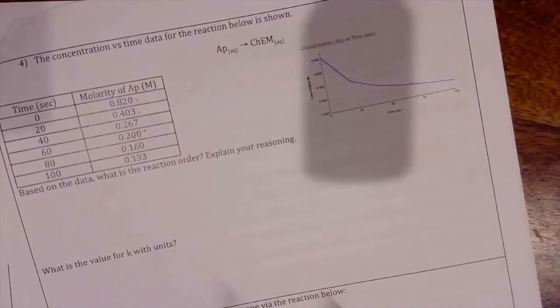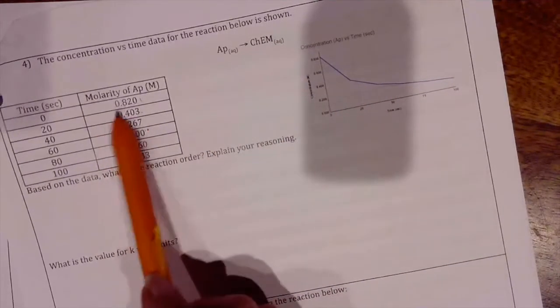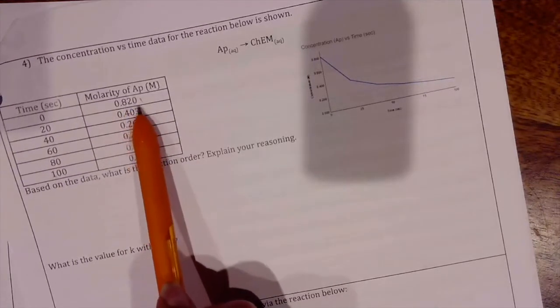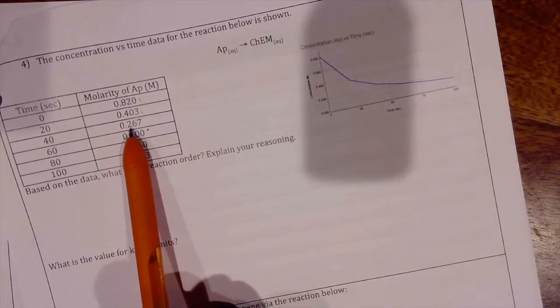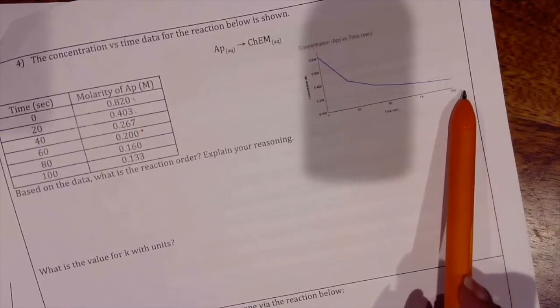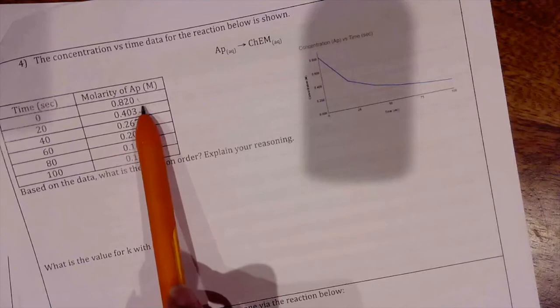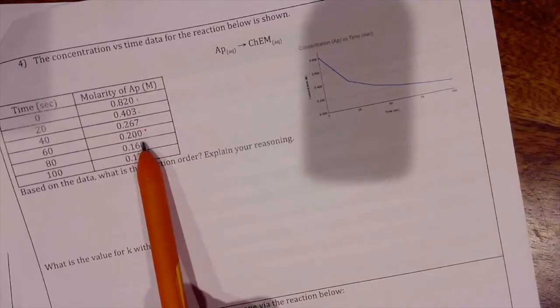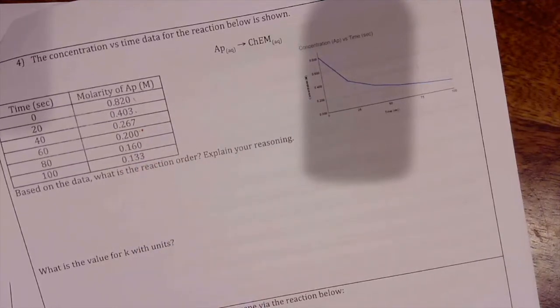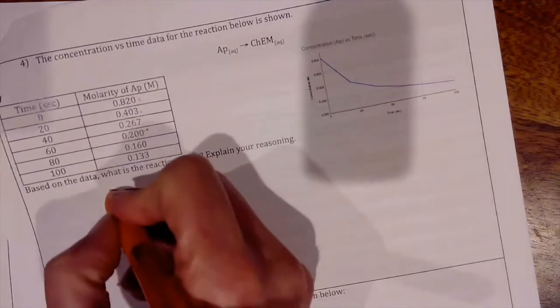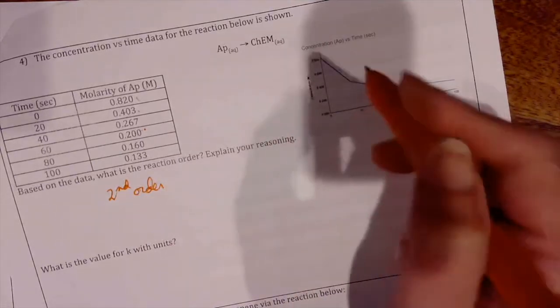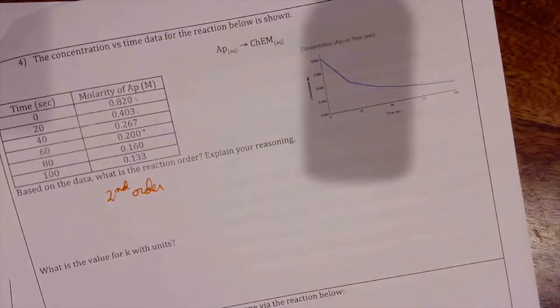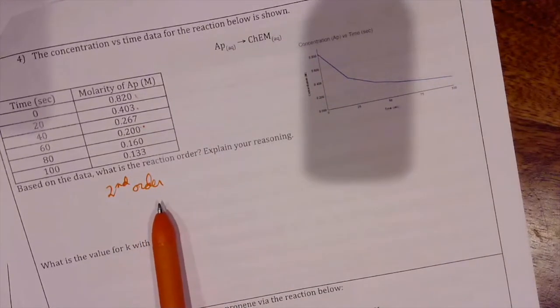It doesn't look like we have a constant half-life either because we go from 0.82 to 0.4 in 20 seconds and then from 0.4 to 0.267 in the next 20 seconds. So this does not appear to be zero order because the concentration versus time data is not linear. It does not appear to be first order because we don't have a constant half-life, and so I'm afraid that we're going to have to decide that this is second order.